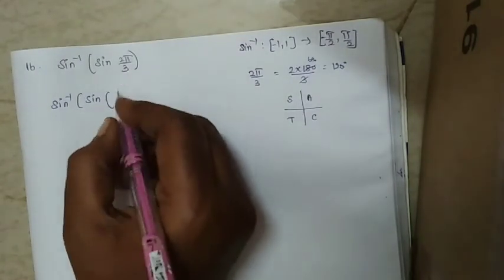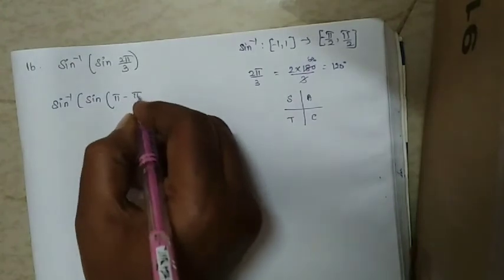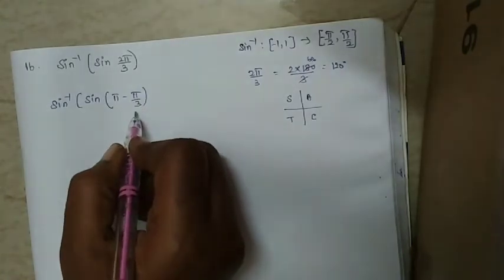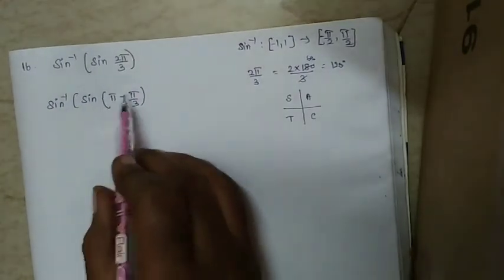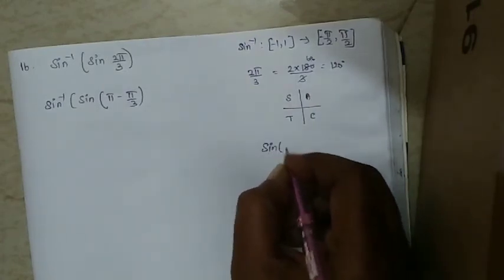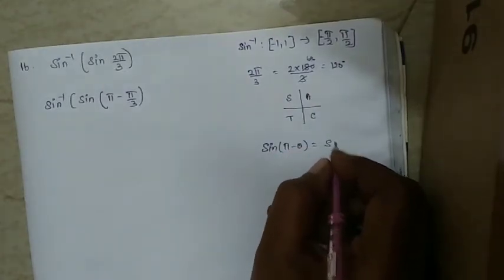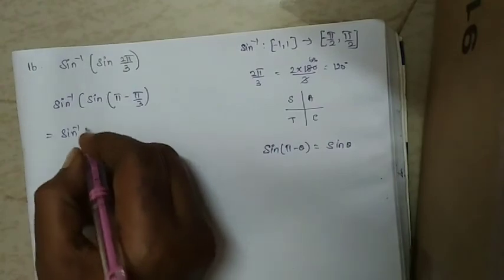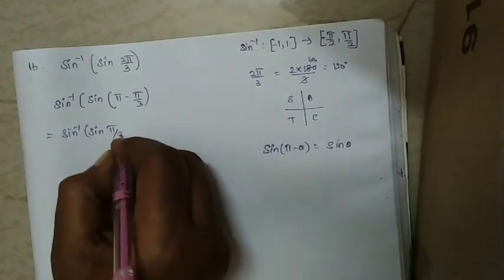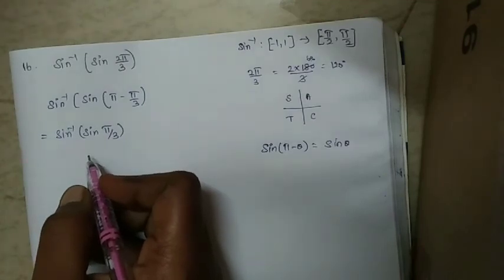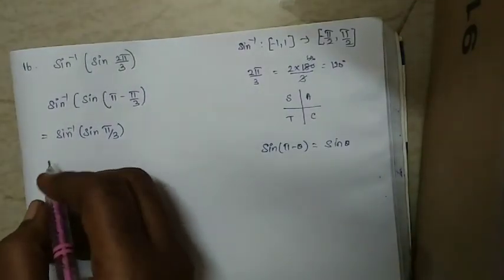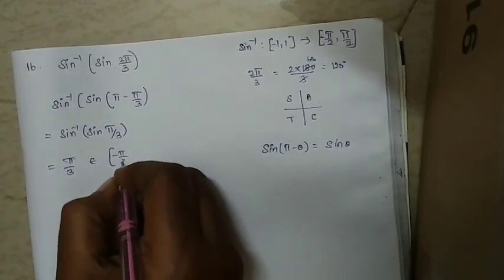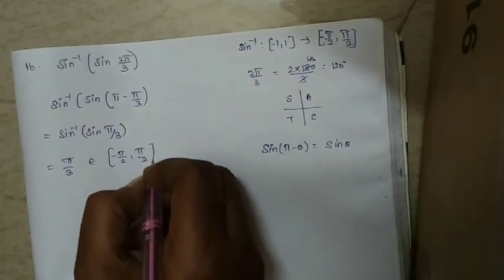So this becomes sin inverse of sin(π/3). Since π/3 belongs to the range [−π/2, +π/2], sin inverse of sin(π/3) = π/3. Therefore the answer is π/3.